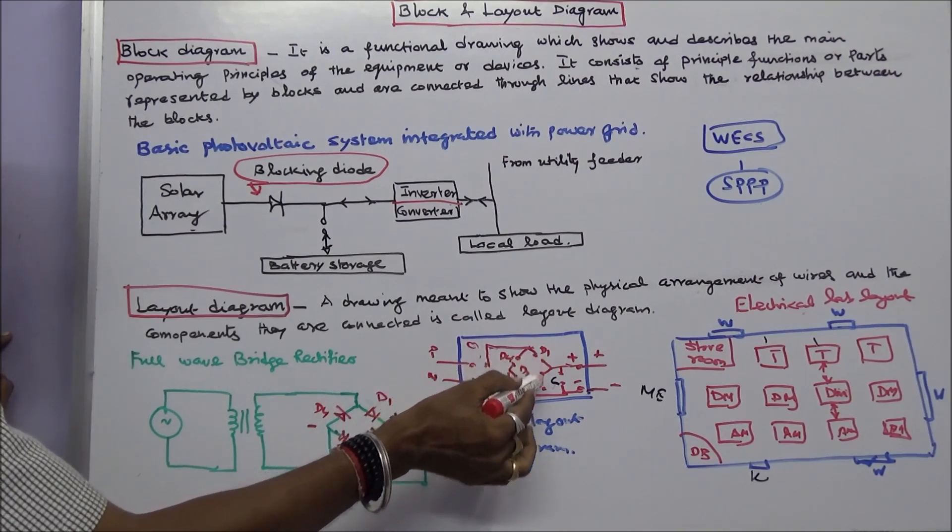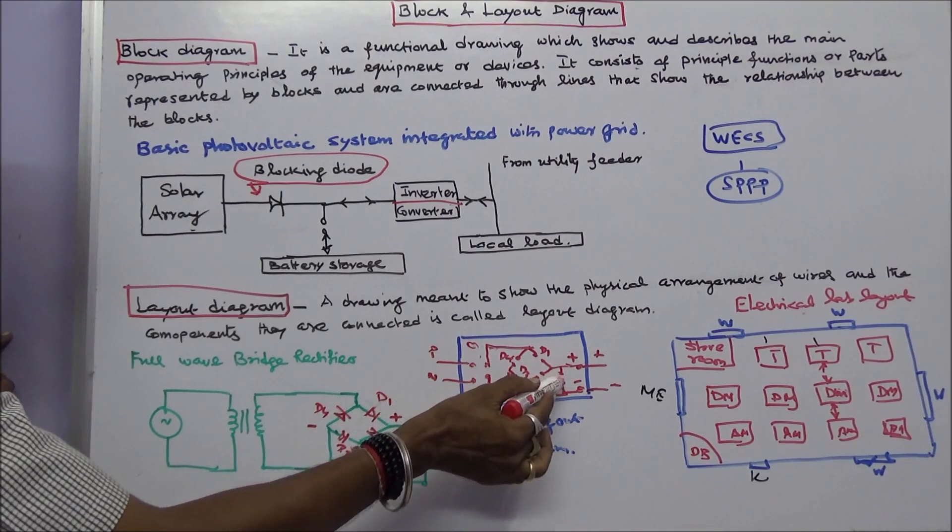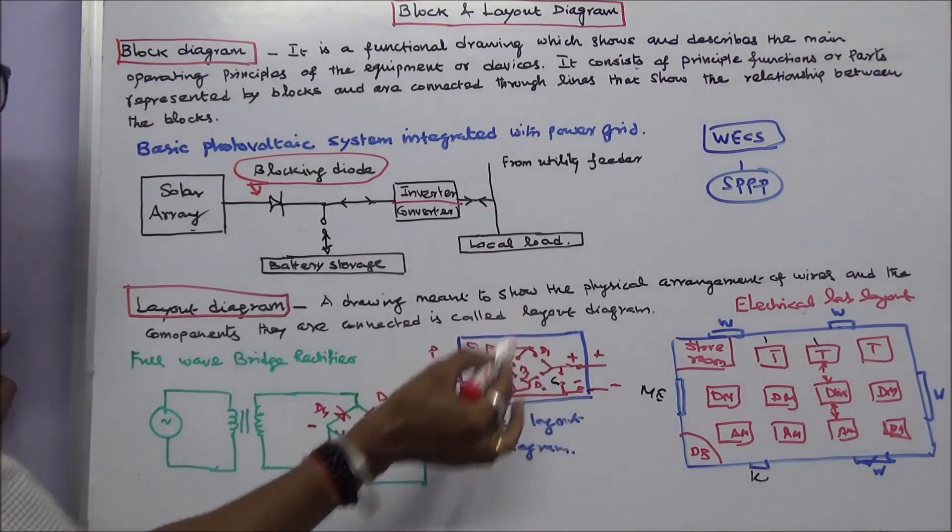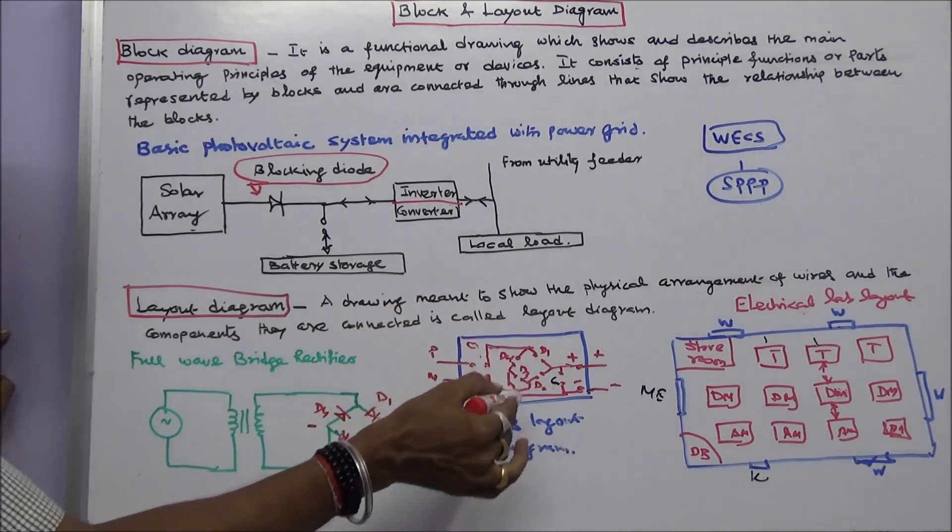This is for diode D1, D2, D3. This is for capacitor. This is output. Then I put into the etching solution. I have got only this diagram. This is called layout, PCB layout diagram.